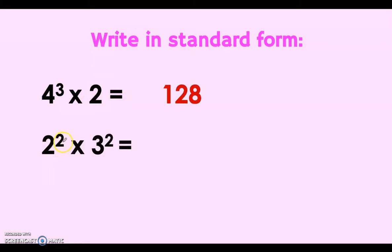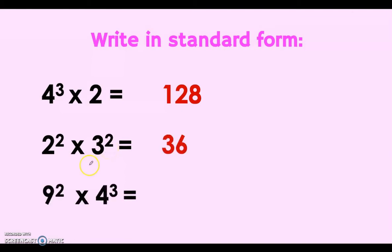Next is 2 to the power of 2 times 3 to the power of 2. We multiply 2 times 2 to get 4, and 3 times 3 to get 9, and 4 times 9 gives us 36. Next is 9 to the power of 4, which is 9 times 9 times 9 times 9 times 9 times 9, and in standard form the answer is 5184.